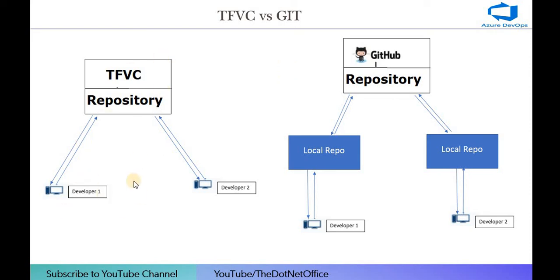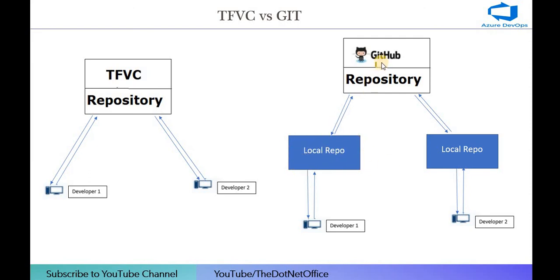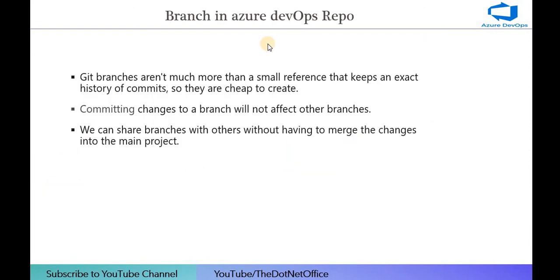What is the difference between TFVC and Git? TFVC is centralized version control. In the diagram, Developer 1 and Developer 2 both commit code to the same repository. If they both push changes simultaneously, there can be merging issues, and a problem in TFVC can break all developers' code. Git is a distributed repository — there is a main repository and each developer has a local repository. Changes first go to the local repository, and once everything is fine they go to the main repository.